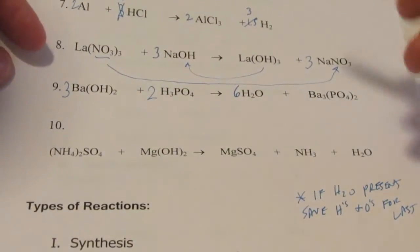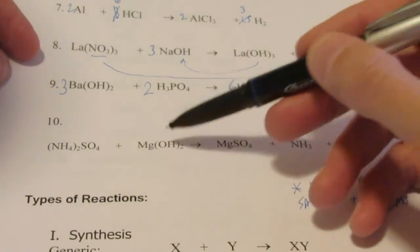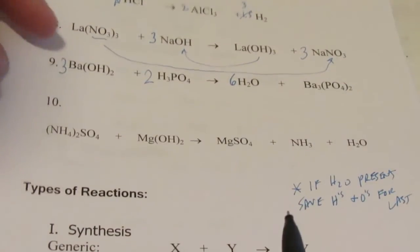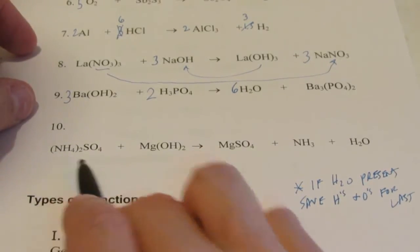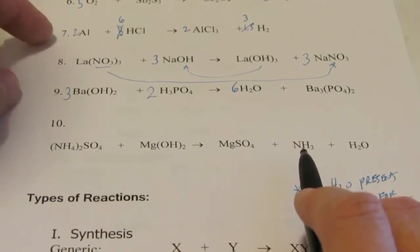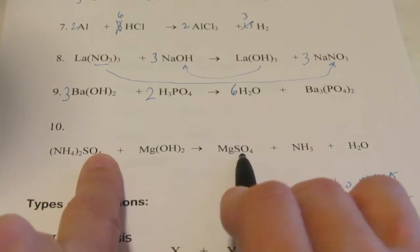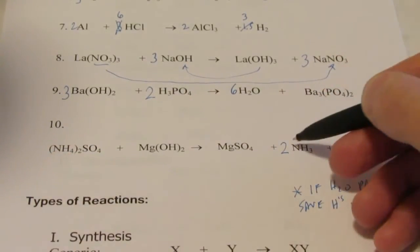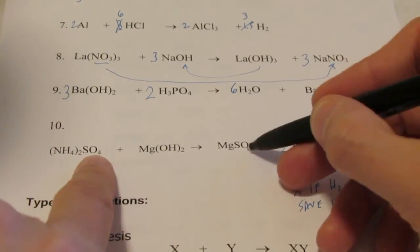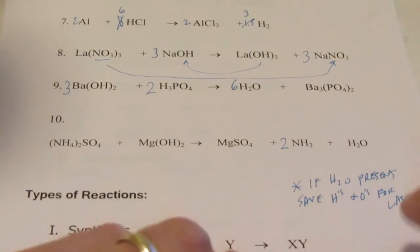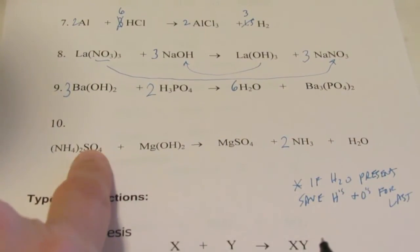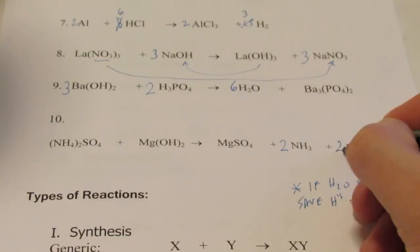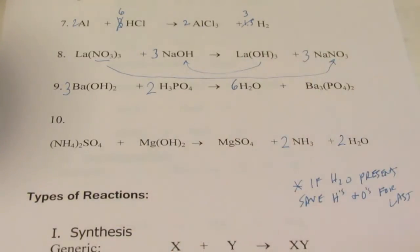Number ten: ammonium sulfate and magnesium hydroxide react to form magnesium sulfate, ammonia, and water. The ammonium turns into ammonia so it doesn't travel as a group, and the sulfates have one of each so nothing needed there. I have two nitrogens, so put a 2 in front of NH3. One sulfate, one magnesium. For H's and O's, I have four oxygens here plus two more is six; putting a 2 in front of water gives two more oxygens for a total of six. Number ten is done.